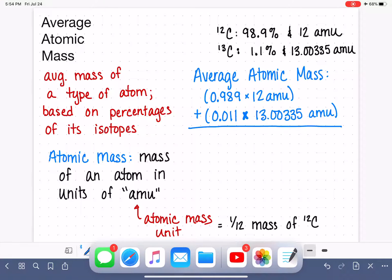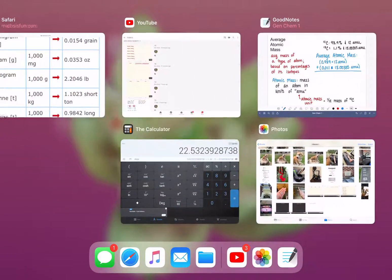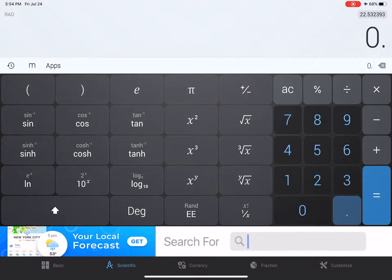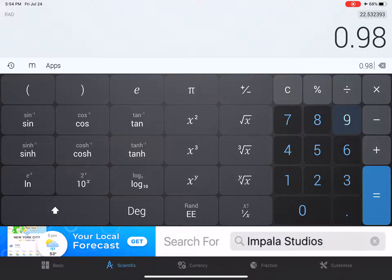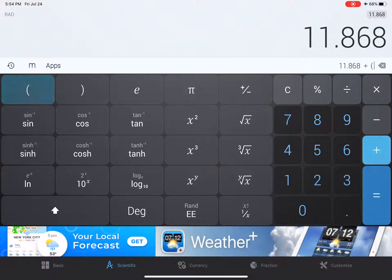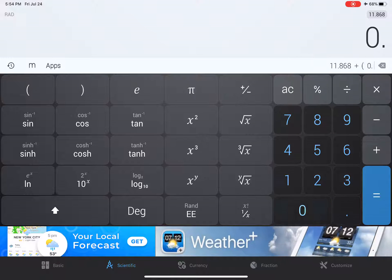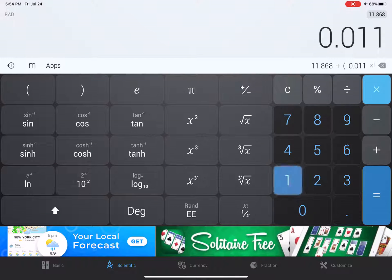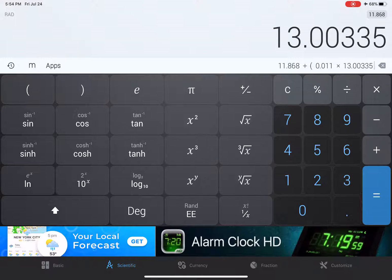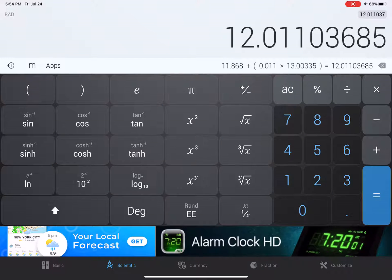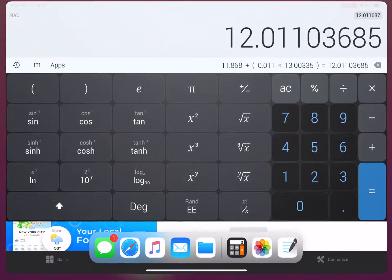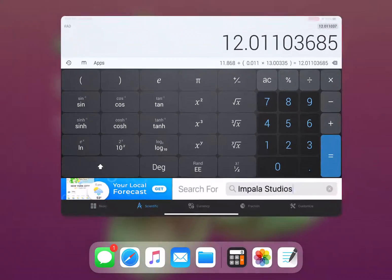Let's get our calculator out for this. We have 0.989 times 12. And we're going to add that to 0.011 times 13.00335. And that gives us an average mass. I'm just going to round it to 12.011.